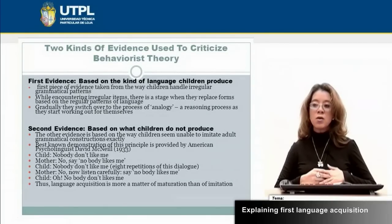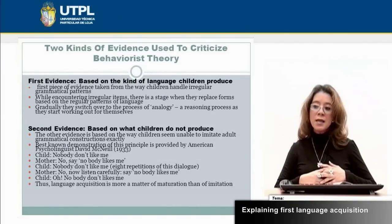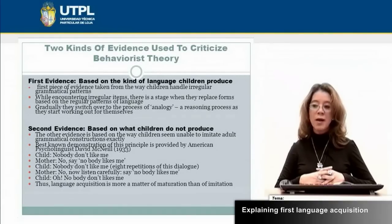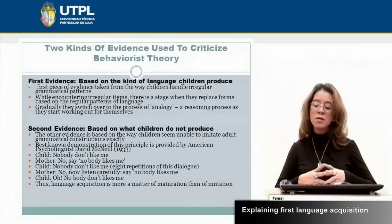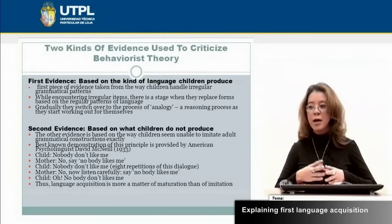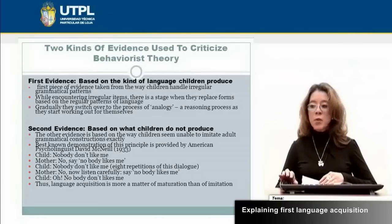Child: 'Nobody don't like me.' Mother: 'Say: nobody likes me.' This is an example of when children use negation incorrectly. They don't use the correct grammatical structures, but the mother tries to teach the children to use the negation correctly through repetition, exercises, and drilling. Language acquisition is more a matter of maturation than of imitation.